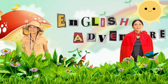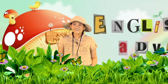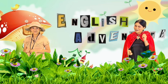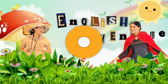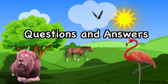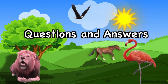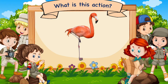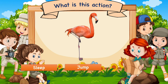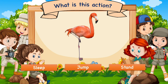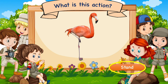Awesome kids, it was definitely fun. You've done a great job. Now let's have some fun exercises. It is time for Questioning and Answering Time. Welcome — do not worry, we will help each other out. So remember, it is okay to make mistakes. Your first question is: what is this action? Is it sleep, jump, or stand? The flamingo is standing on one leg. Yes! Correct!